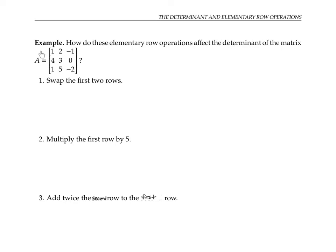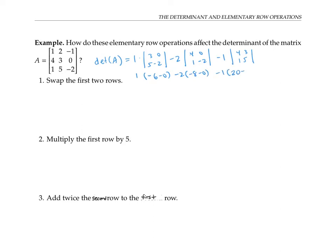Let's start by calculating the determinant of matrix A. I'll expand along the first row. Working out the determinants of those two-by-two matrices, I get (−6 − 0) minus (8 − 0) plus (20 − 3). That works out to a total of negative seven for the determinant of A.